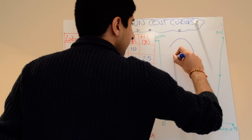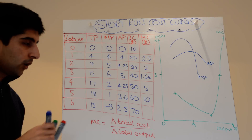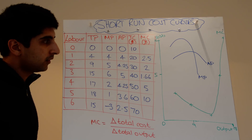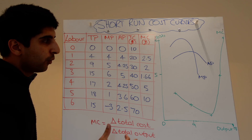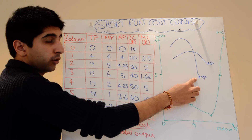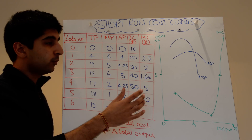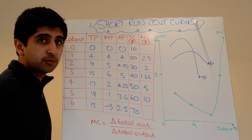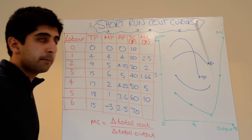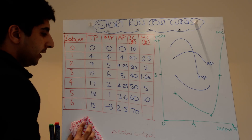Our average product curve looks like a hill shape too. Therefore, if we know the marginal cost curve is just a mirror reflection of the marginal product curve because of the law of diminishing returns, then the average cost curve will just be a mirror reflection of the average product curve. So the average cost curve will just look like that — a mirror reflection of it. Let's put that onto one diagram and see what we get.